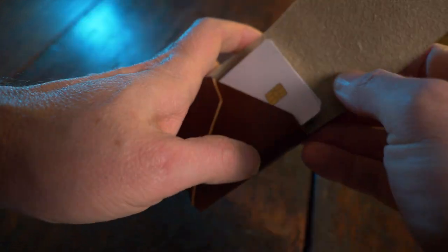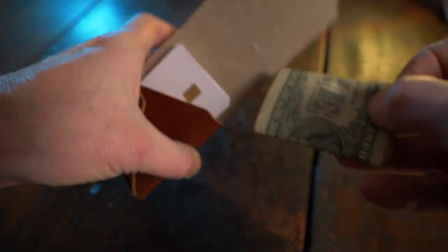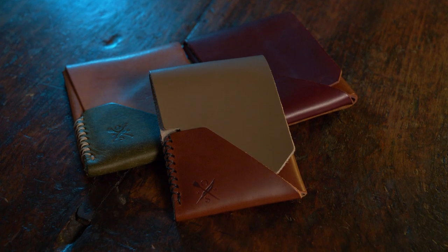Those two pockets can hold between four to five credit cards and some cash folded into quarters. Everything's held together with the flap that's tucked into a tuck closure.